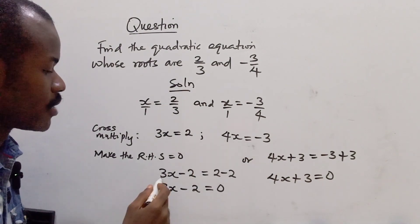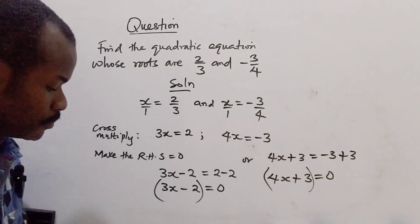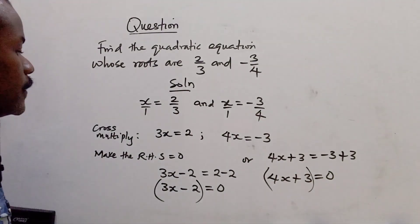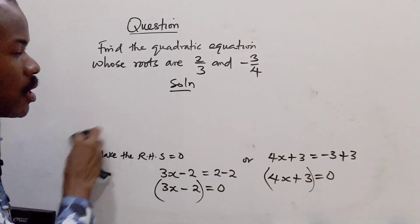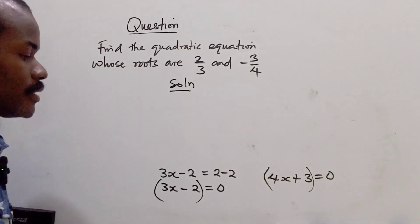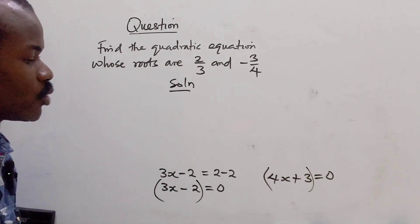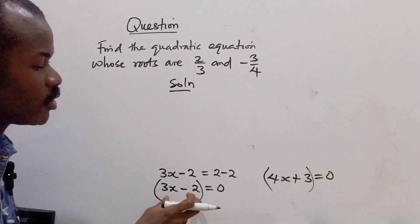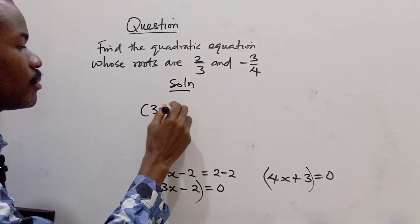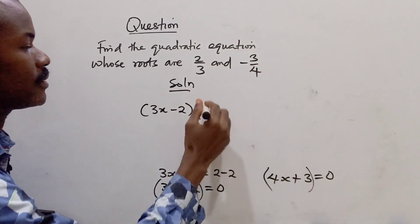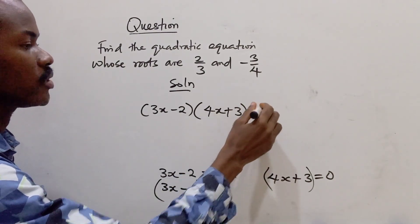So this is our next step. Now you can put these two in brackets. So let's proceed. The next thing is, what is our next step from this? If you solve the quadratic equation, you realize that we have (3x - 2) and (4x + 3) equals 0.